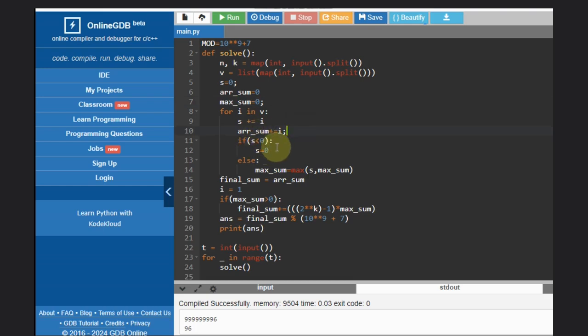And if it is less than 0, that means it is no point to consider that subarray. So we are reinitializing, and if that is not the case, we'll take the max sum.